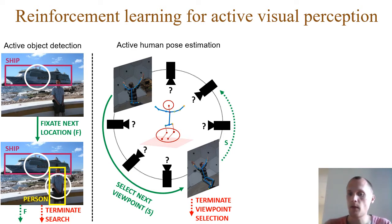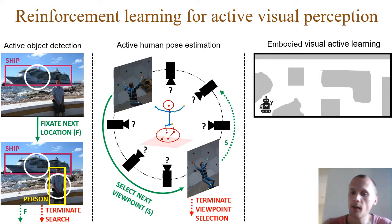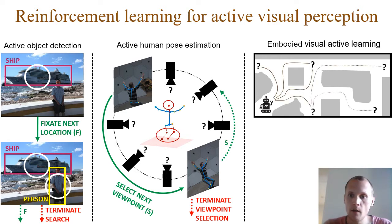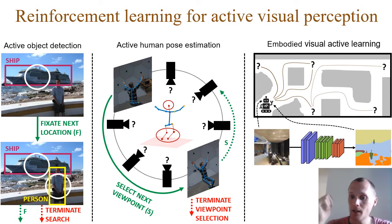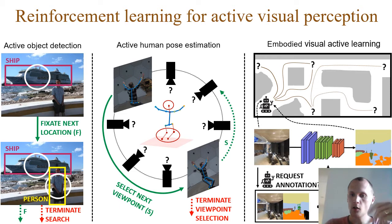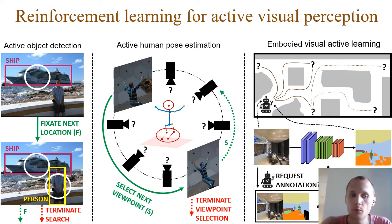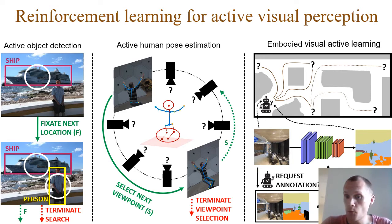The question of when to stop — how many viewpoints are sufficient — is handled by the agent terminating automatically. Finally, the thesis establishes a new framework called Embodied Visual Active Learning. Here, a household robot moves around in a 3D environment, getting observations from its camera, with a semantic segmentation perception model. The agent's task is to selectively request annotations from a human in the loop, and since annotations are expensive, it must be very selective about which viewpoints to ask about.